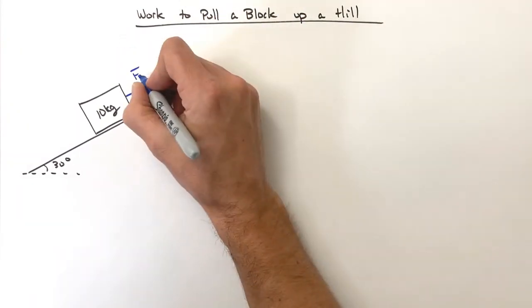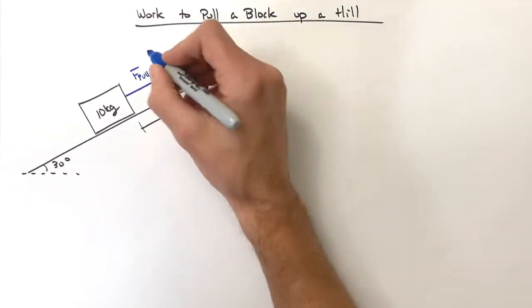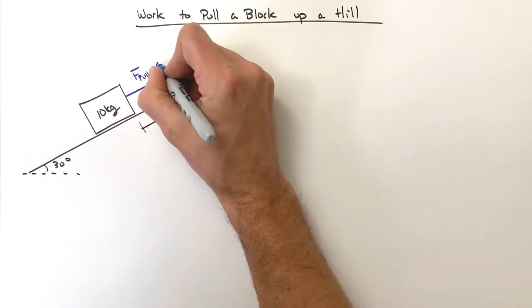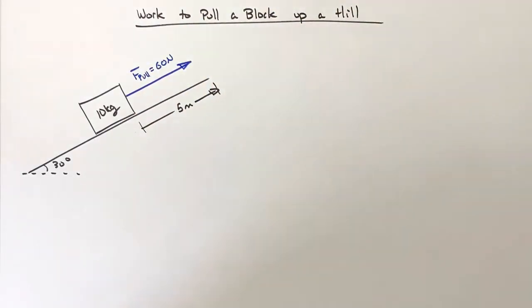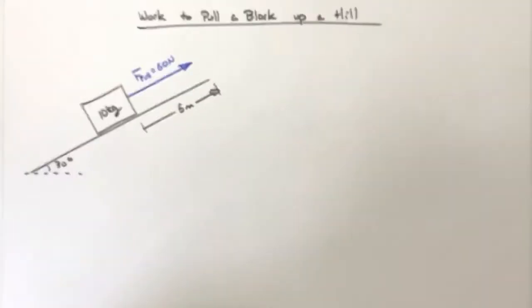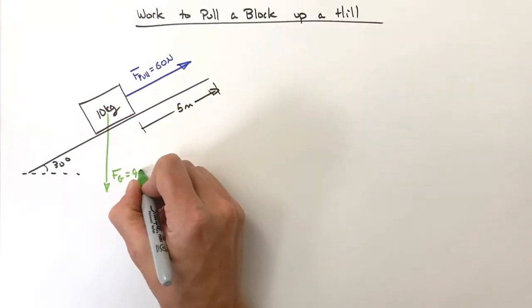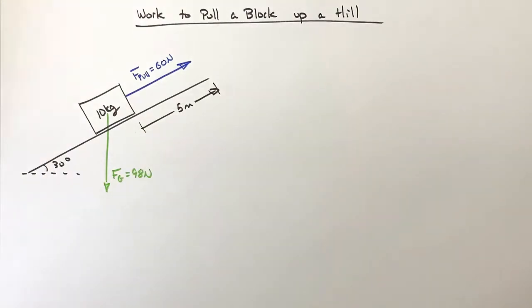Let's pull up the hill on this block with a force of 60 newtons. Of course we're going to have gravity, and lastly we have the normal force.